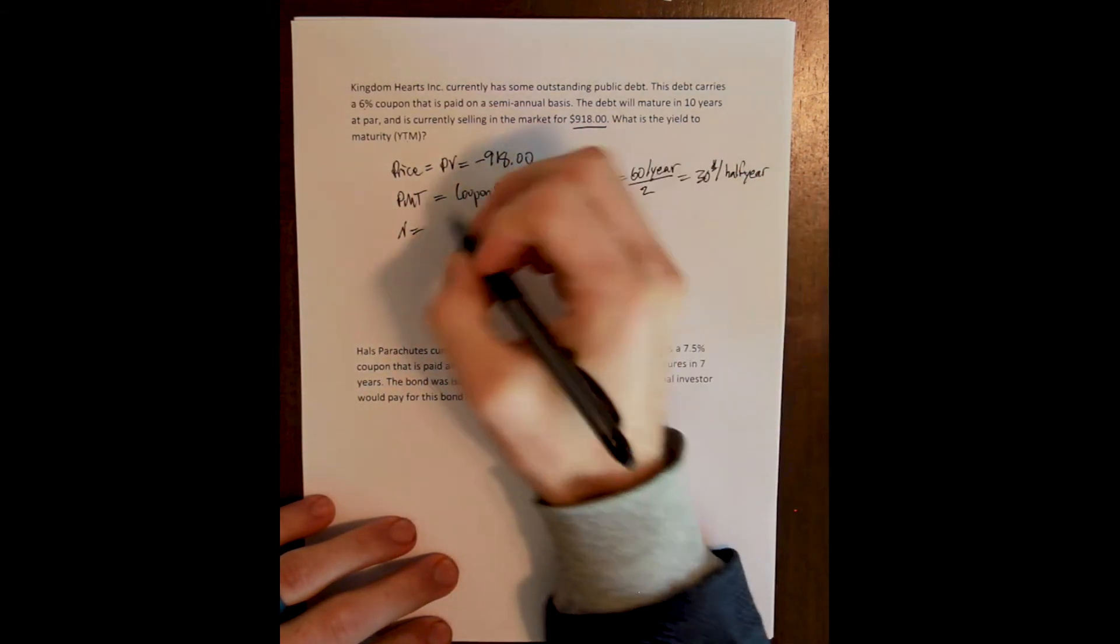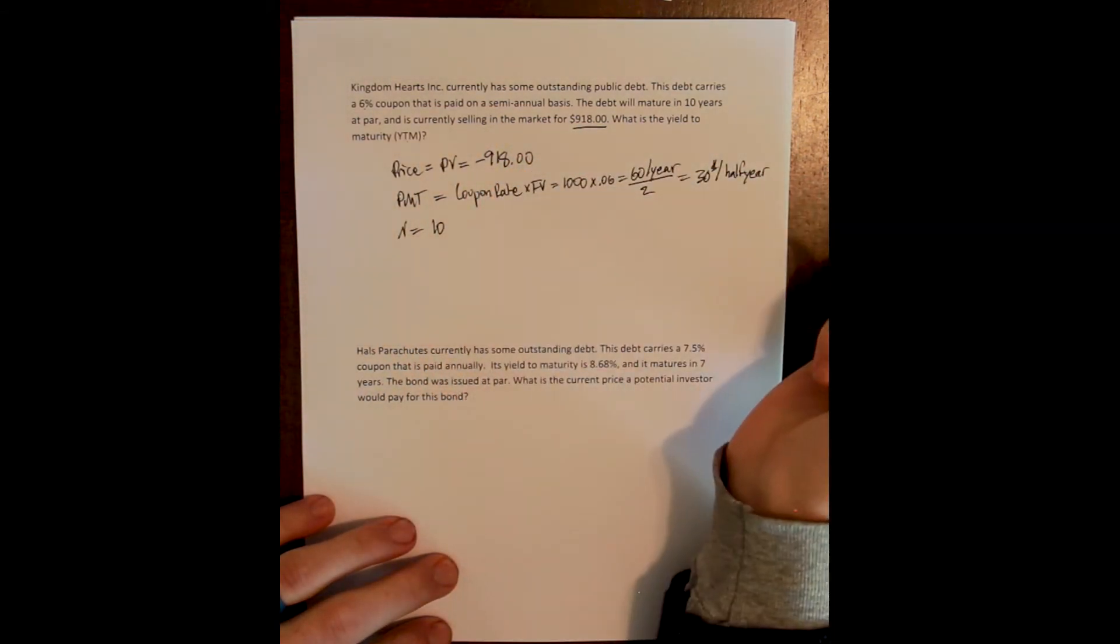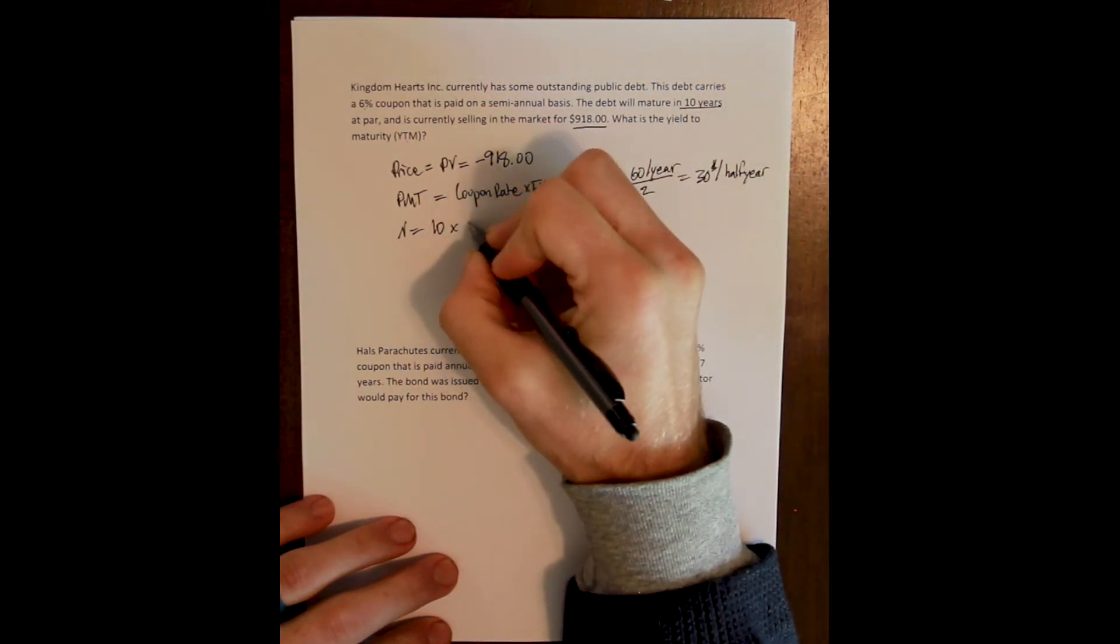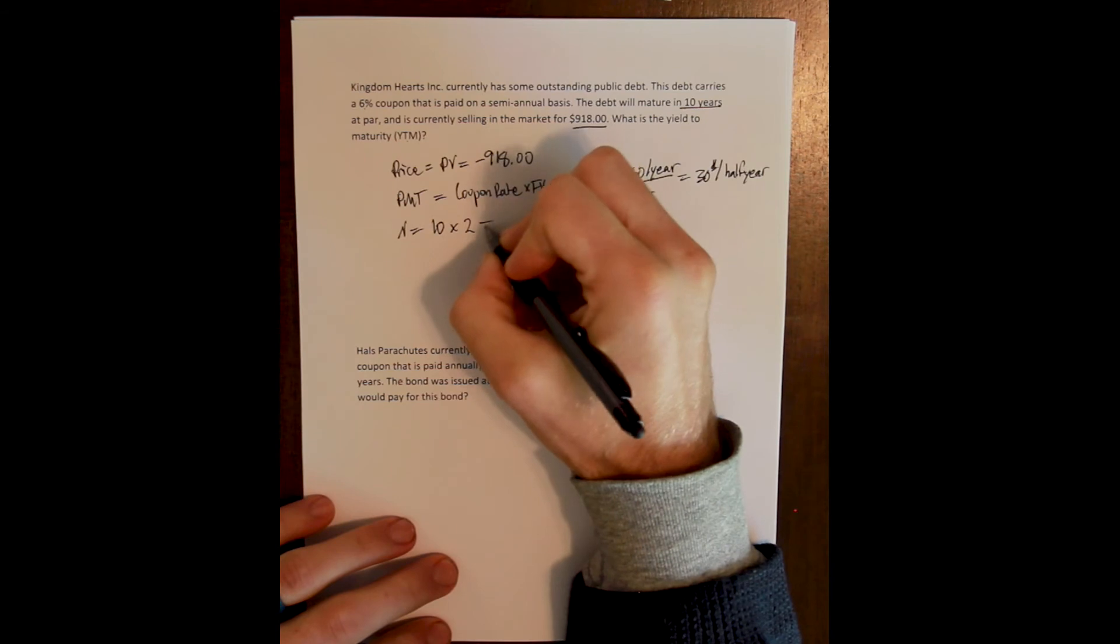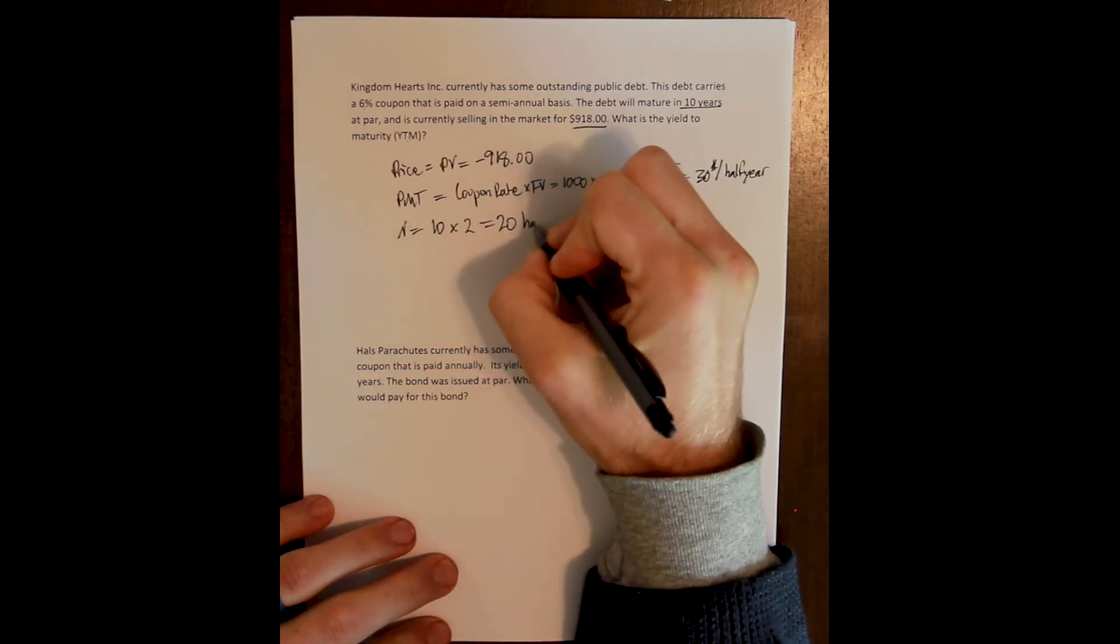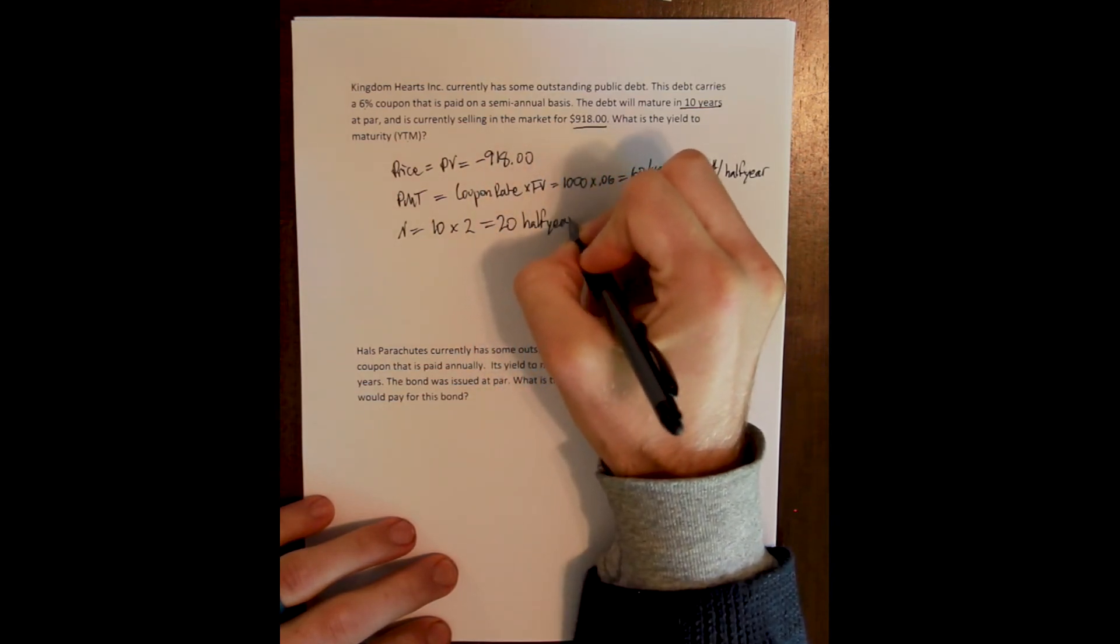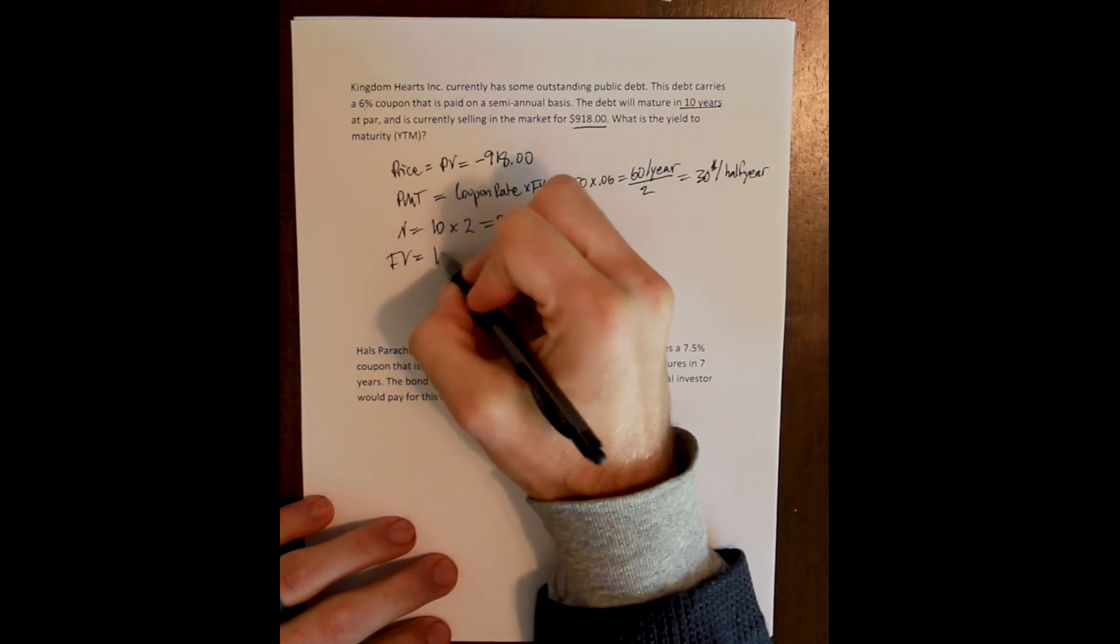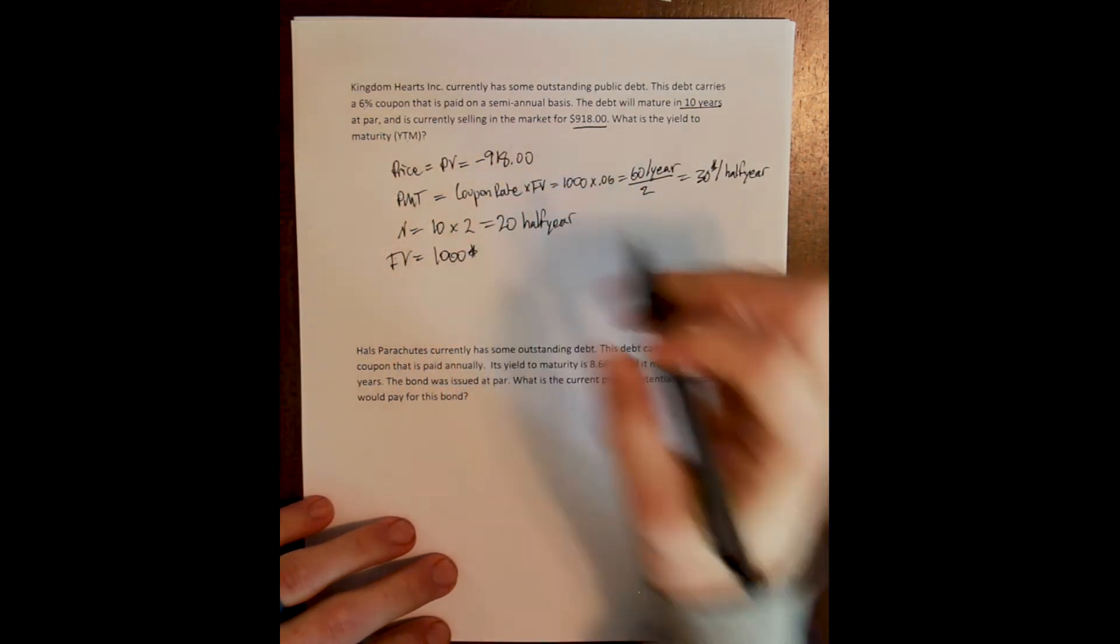N is our remaining maturity, and there are 10 years remaining. The debt will mature in 10 years. But we have 20 half years within those 10 years to go until this. Future value is always the face value, and the face value is always $1,000.